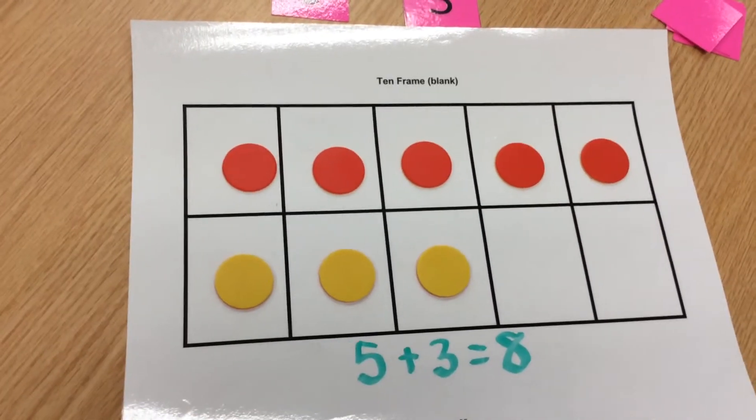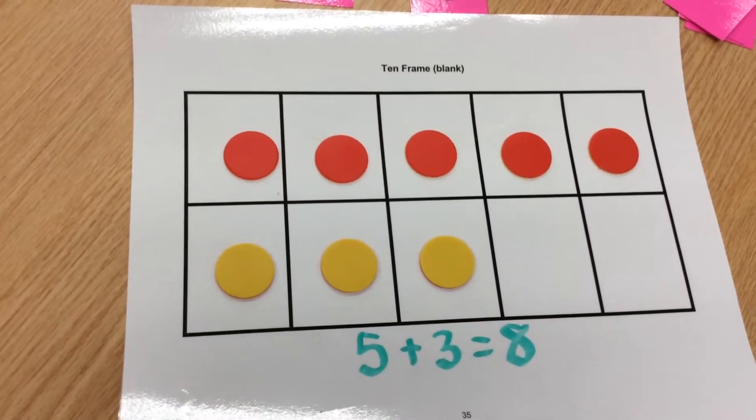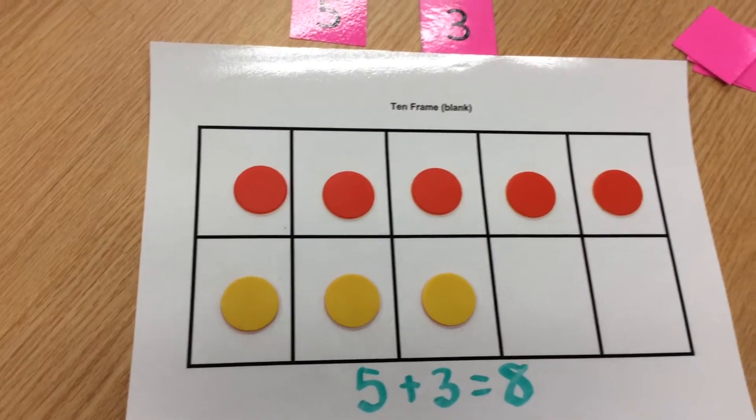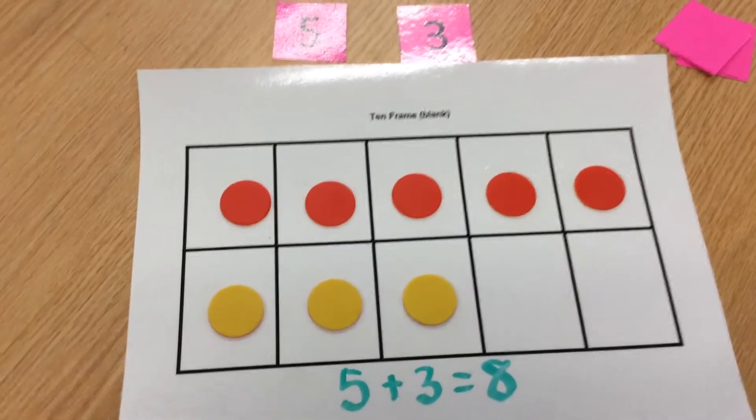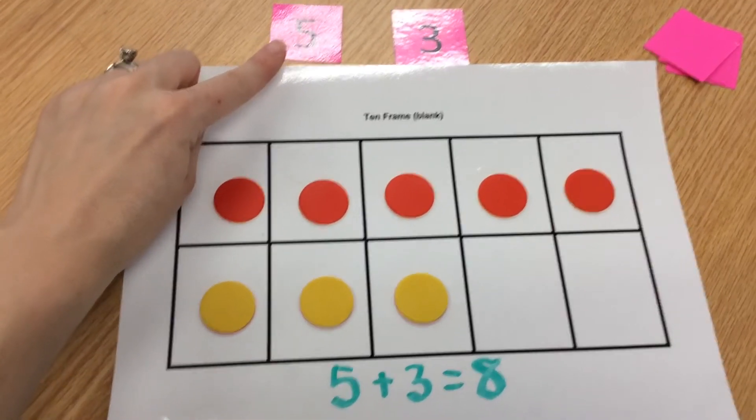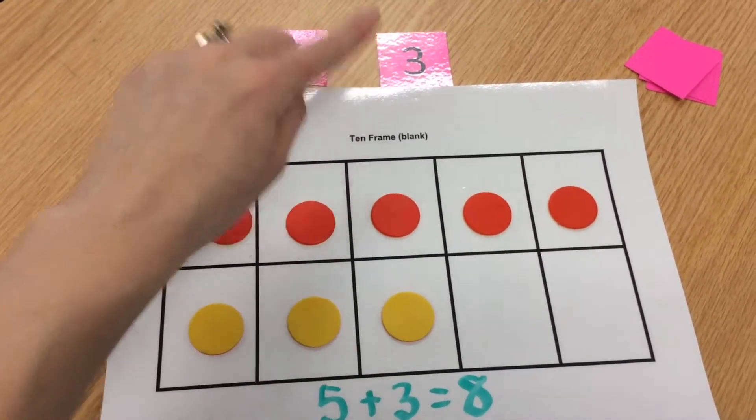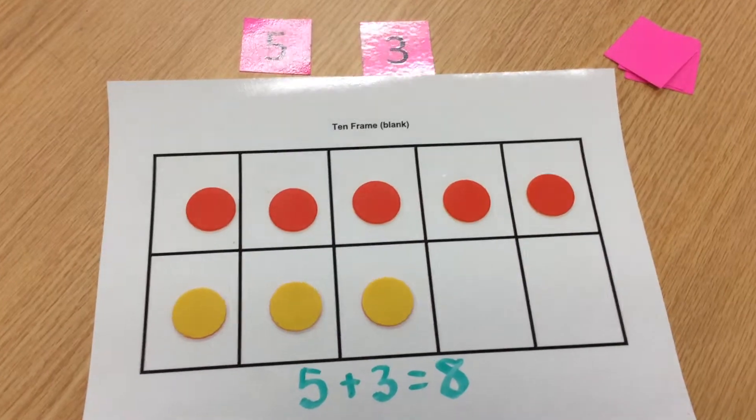Set your timer for 10 minutes and take pictures of the addition problems you work with. Remember the first number needs to be shown with red counters. The second number needs to be shown with yellow counters.